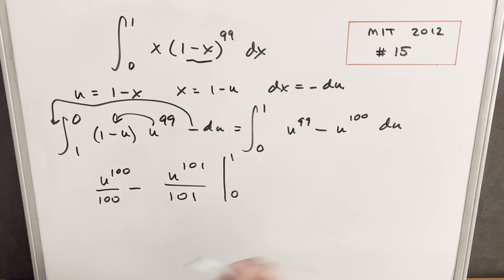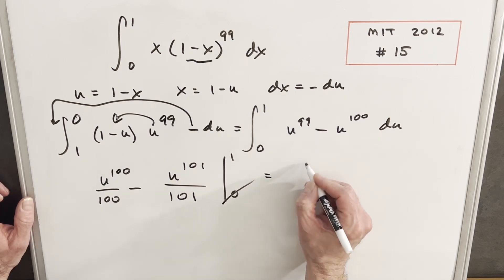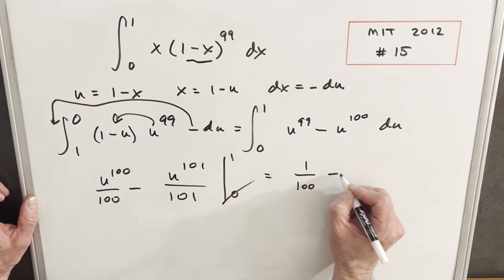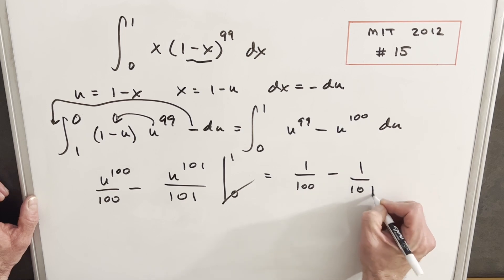And I'm essentially not going to look at the 0 term. When we plug in 0 in here, we just get back 0. So I'm going to skip that. And we're just plugging in 1. So we're going to have 1 over 100 minus 1 over 101.